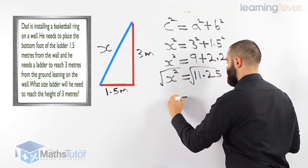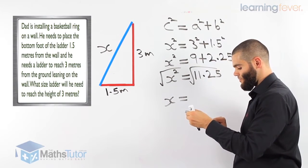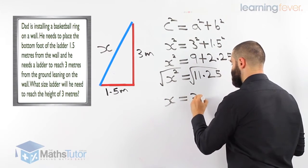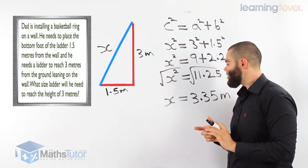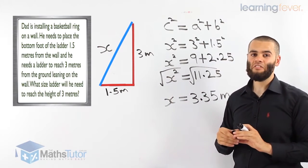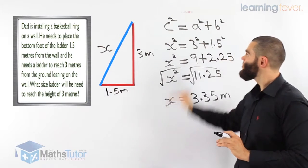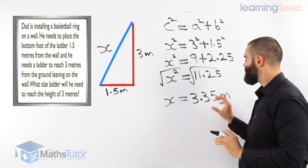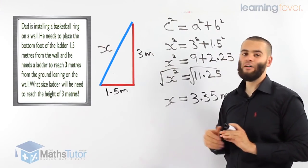Now we square root 11.25. The ladder needs to be at least 3.35 meters to two decimal places. Dad needs a ladder that is at least 3.35 meters to reach the height he needs to install this basketball ring. Remember: we were finding the hypotenuse, so we used the hypotenuse formula and square rooted at the end. 3.35 meters is the size of the ladder needed to install this basketball ring 3 meters high above the ground.